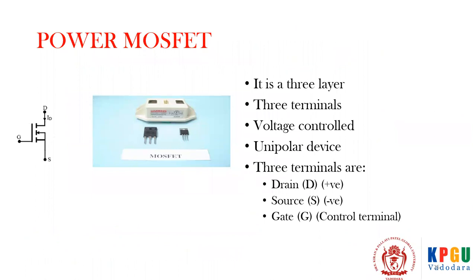These are devices used as a power switch. A diode can be turned on by forward biasing and turned off by reverse biasing, so it is an uncontrolled switch. A transistor or BJT used in a common emitter configuration can be turned on by giving a base current, so it is a current-controlled device.